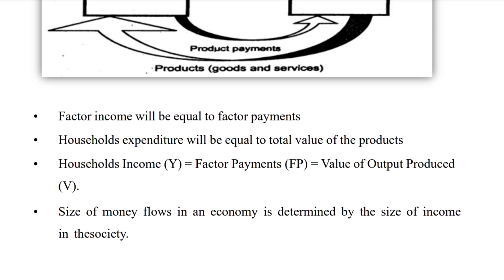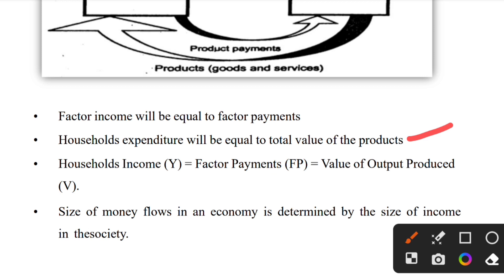The factor income will be equal to the factor payment. The household expenditure will be equal to the total value of the product. The household income equals the factor payment, and the value of the output is produced accordingly. The size of money flow in the economy is determined by the size of income in the society.